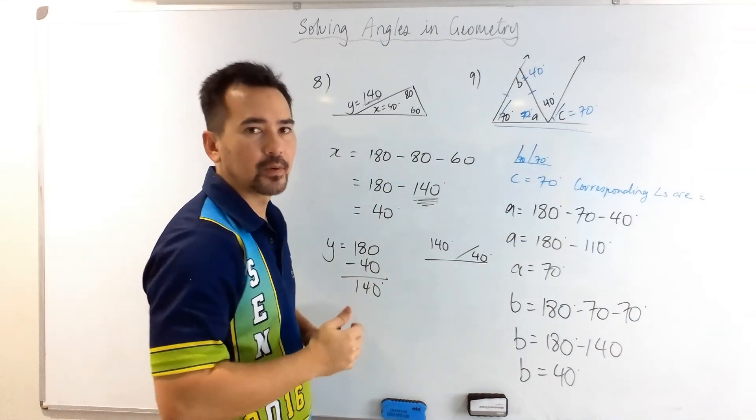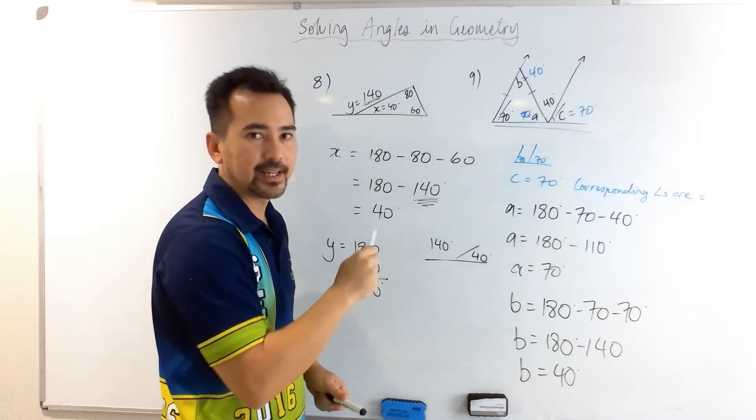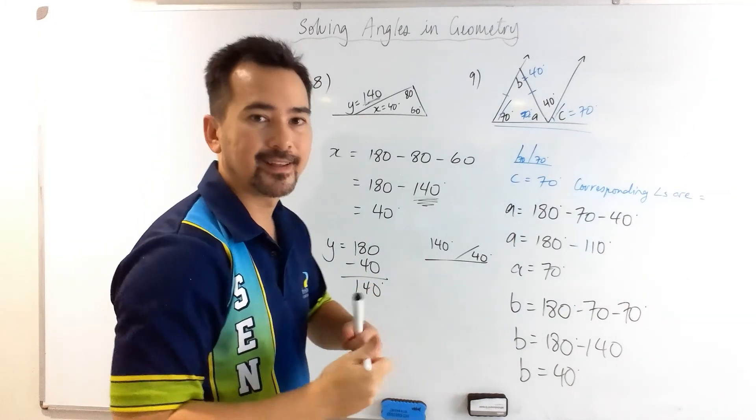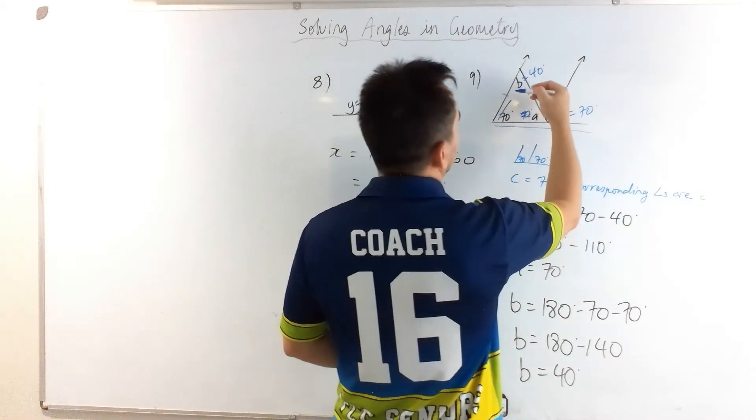Now, we have 40 degrees right here. Is that a coincidence, do you think? Or is there a special rule? And I hope you've seen it. We have the z-rule,